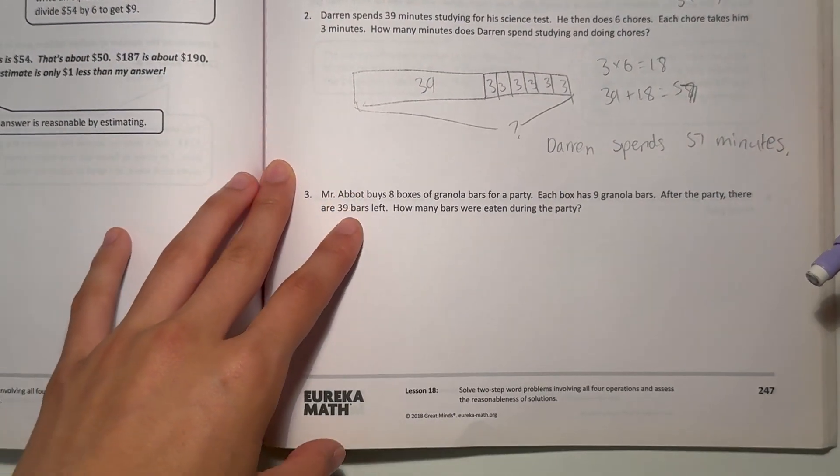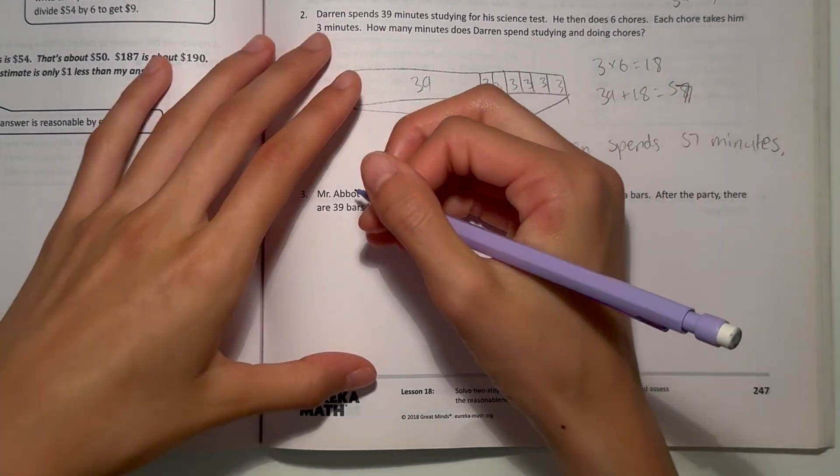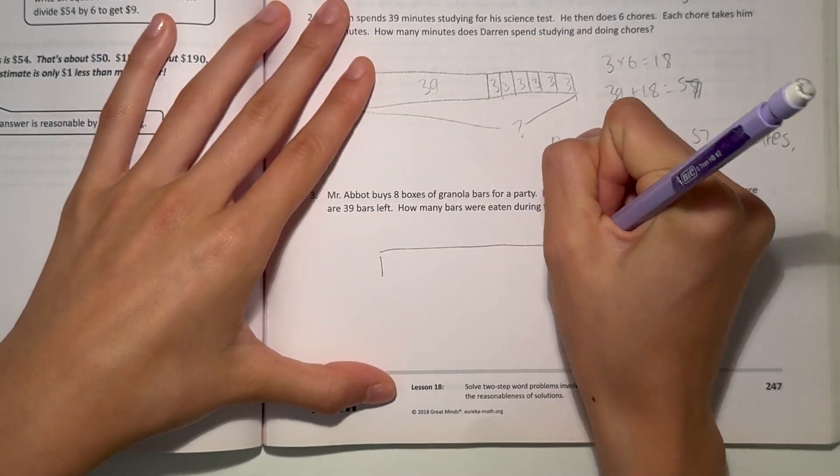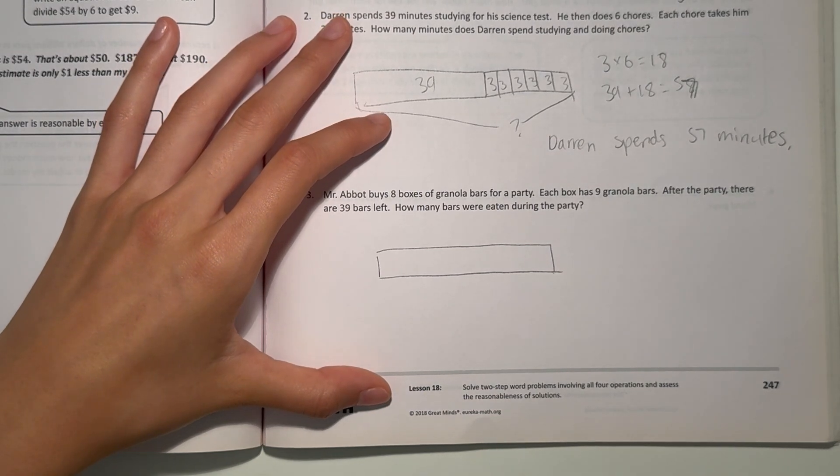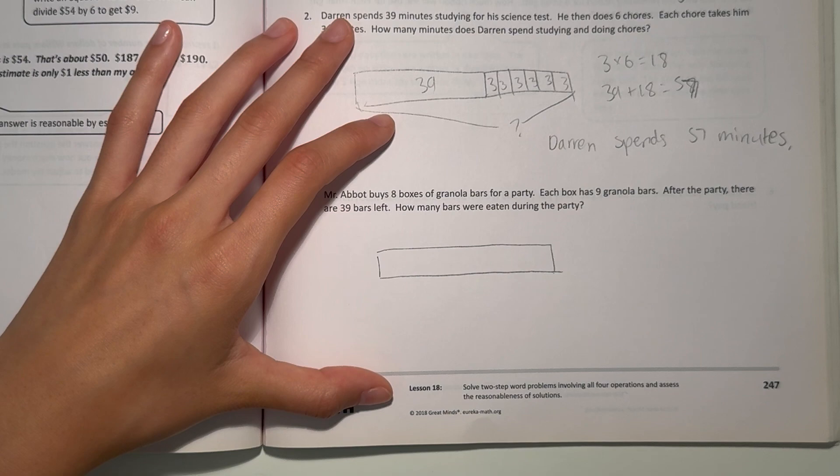Here are 3. Mr. Abbot buys 8 boxes of granola bars for a party. Alright, so 8 boxes. Each box has 9 granola bars. After the party, there are 39 bars left. How many bars were eaten during the party?